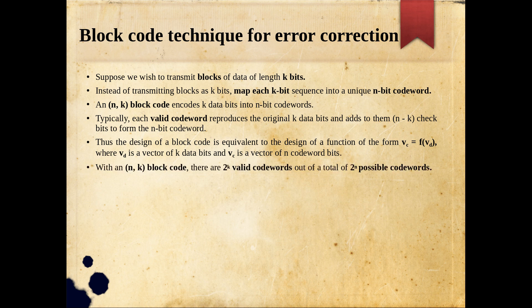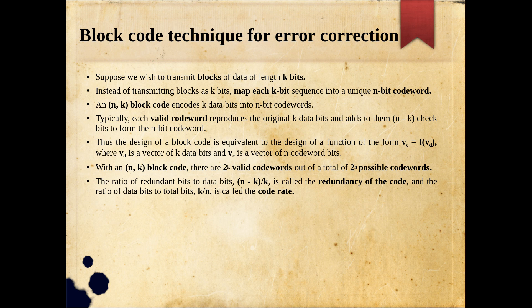With an (n, k) block code there are 2^k valid codewords out of 2^n possible codewords. The 2^k valid codewords provide the mapping for the original messages; the remaining are invalid. Now some parameters: to define the efficiency of a block code, the ratio of redundant bits to data bits — (n minus k) divided by k — is called the redundancy of the code. This tells you how many extra bits you send for every k information bits.